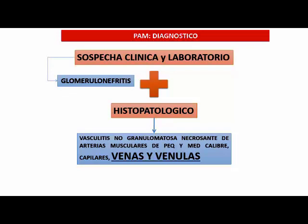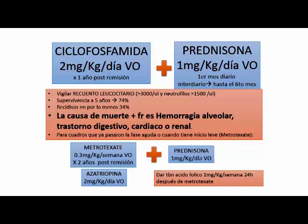El tratamiento es muy similar a los dos anteriores: también es ciclofosfamida y prednisona, también metotrexato o azatioprina. Es importante tener en cuenta que estos pulsos de ciclofosfamida son bastante intensos, son pacientes que van a estar inmunosuprimidos. La causa de muerte más frecuente es hemorragia alveolar. A diferencia del Wegener donde la causa es renal fundamentalmente, y el Churg-Strauss es cardíaca.